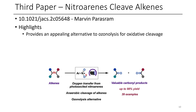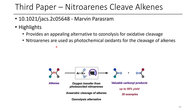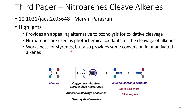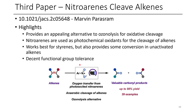Here you can see that a nitroarene is used instead as the oxidant. They use this under photochemical conditions to cleave alkenes. This works best for styrenes, but it also provides some conversion for unactivated alkenes. While this doesn't work as well for aliphatic alkenes, there's an upcoming paper from Leonori's group which addresses this issue.